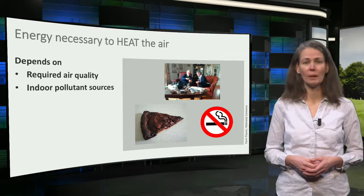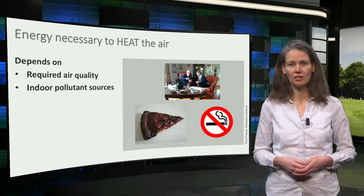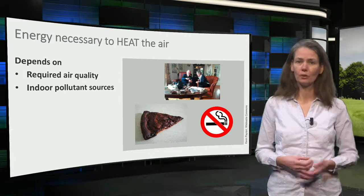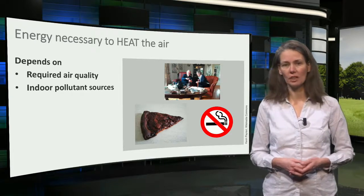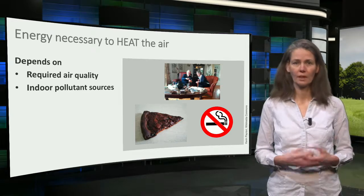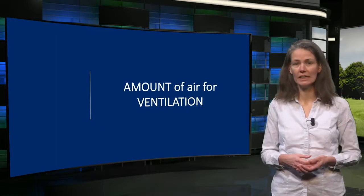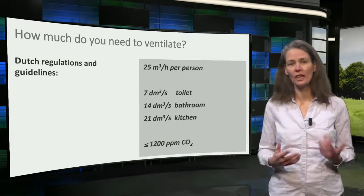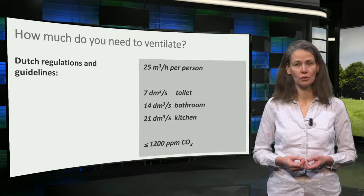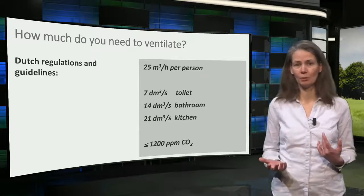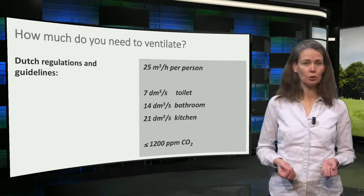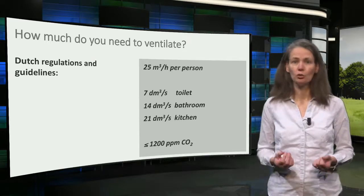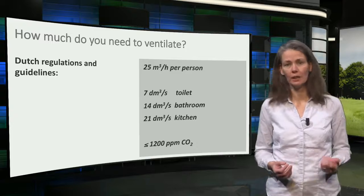The second aspect of the energy demand for ventilation is the energy necessary to heat the air. This amount of energy depends on the required air quality inside and the presence of indoor pollutant sources. The Dutch regulations and guidelines state around 25 cubic meters per hour per person, or different values for toilet, bathroom, and kitchen ventilation. A CO2 concentration of less than 1200 ppm is also advised to ensure a healthy and generally comfortable indoor air quality.